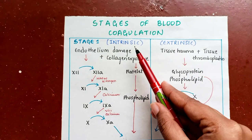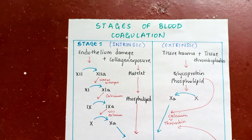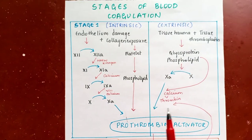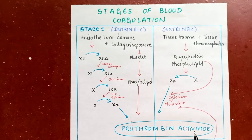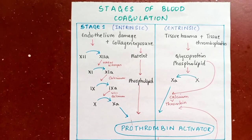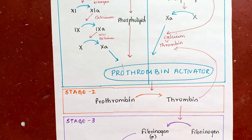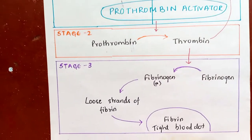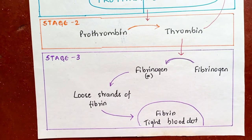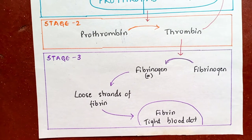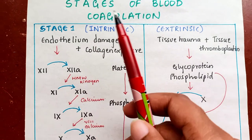In Stage 1, there are two pathways — intrinsic and extrinsic — which lead to the formation of prothrombin activator. Stage 2 is about the conversion of prothrombin to thrombin, and Stage 3 is about the activation of fibrinogen.